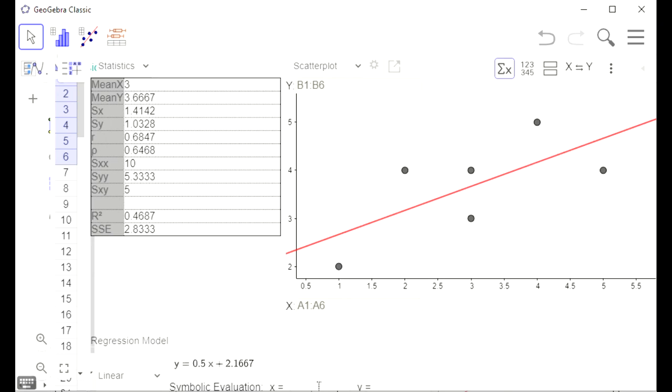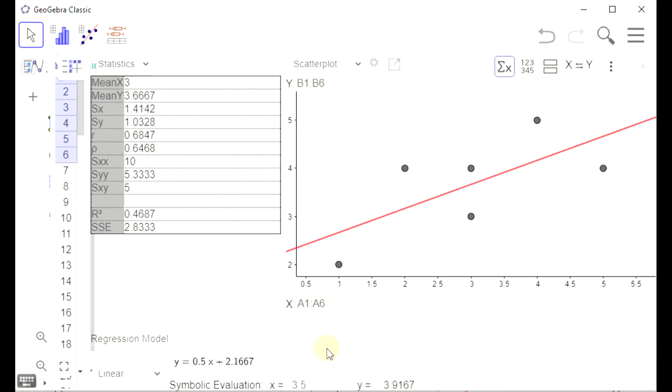We can use the x equals and y equals here to make predictions. So, for example, if we want to use the equation to predict the y value when x is 3.5, we can put 3.5 in, and it'll automatically use the equation to predict y.